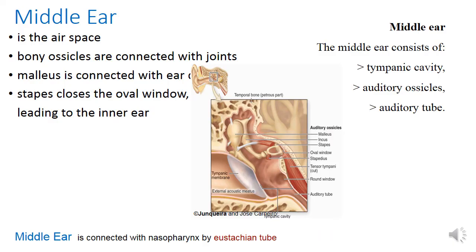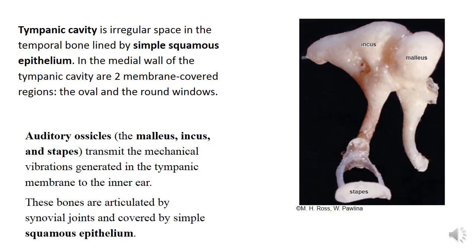Middle ear consists of three parts: tympanic cavity, auditory ossicles, and auditory or Eustachian tube. Tympanic cavity is an irregular space in the temporal bone, lined by simple squamous epithelium. It has two regions covered by membrane: oval and round window. Inside are located auditory ossicles — malleus, incus, and stapes. These ossicles transmit mechanical vibration generated in the tympanic membrane to the inner ear. Each of the ossicles is also covered by simple squamous epithelium.